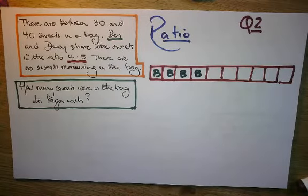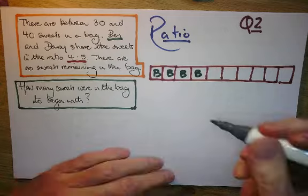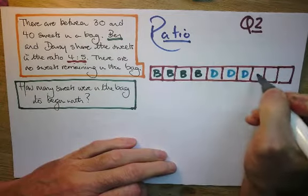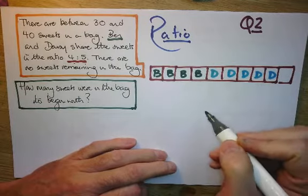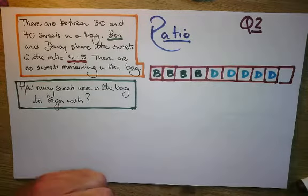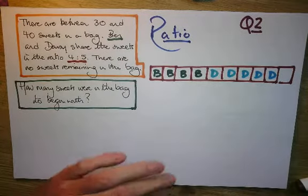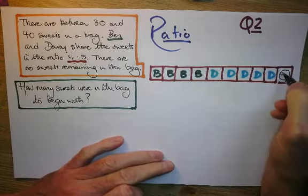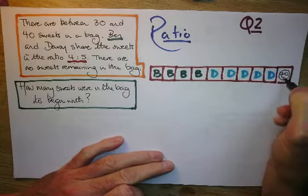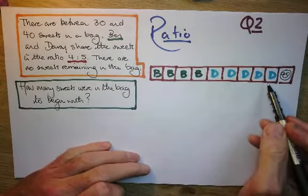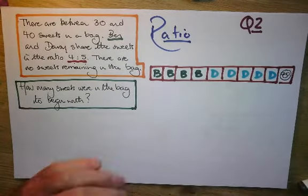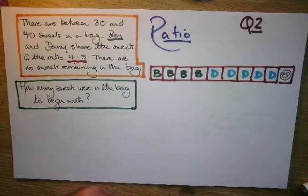I don't know how to answer the question if I'm honest at the moment — I'm just putting out what I know, and then don't get stressed. So these are the ones we're looking at. And I know that I've got between 30 and 40 sweets, with no remaining ones.